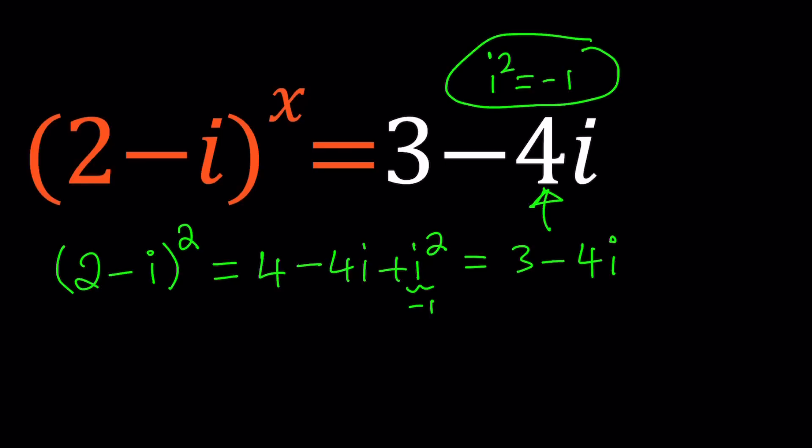But in this case, I wanted to build a relationship between the base on the left-hand side and the answer on the right-hand side, so that we could come up with some quick and easy solutions. So what does this mean? This means I can replace 3-4i with (2-i)^2.